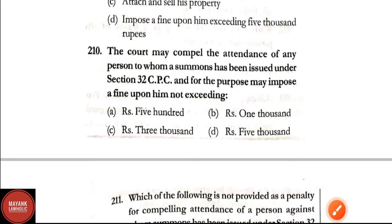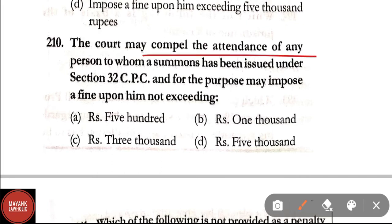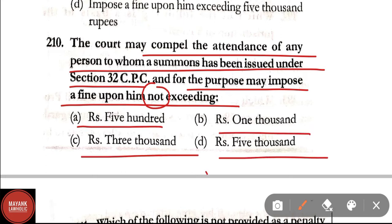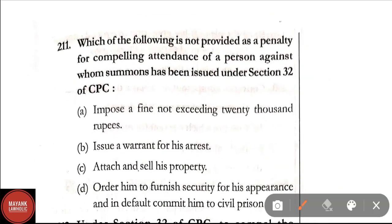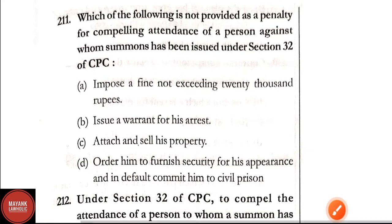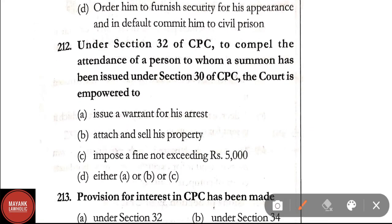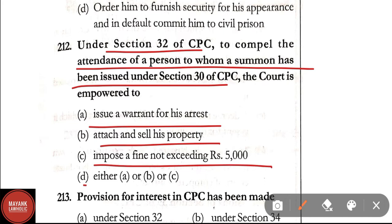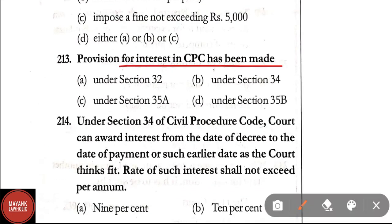Question 210: The court may compel attendance under Section 32 of CPC and may impose a fine not exceeding — 5000, 1000, 3000, or 5000 rupees? Correct answer: Option D, 5000 rupees. Question 211: Which of the following is NOT provided as a penalty for compelling attendance under Section 32? Correct answer: imposing a fine not exceeding rupees 20,000. Question 212: Under Section 32 of CPC, the court is empowered to issue a warrant, attach and sell property, impose a fine not exceeding 5000 rupees. Correct answer: Option D — either A, B, or C.